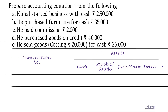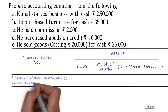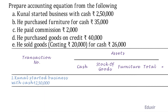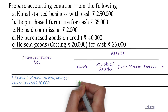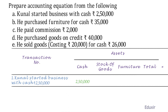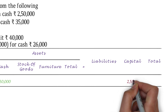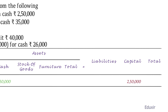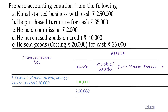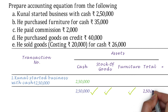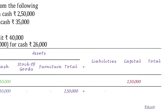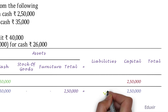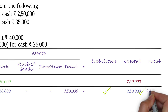The first transaction is: Kunal started business with cash ₹2,50,000. This transaction increases the cash as asset by ₹2,50,000 and also increases the capital by ₹2,50,000. After this transaction, the business will have ₹2,50,000 worth of cash, no stock of goods yet, no furniture yet. Total assets will be ₹2,50,000, no liabilities yet, total capital ₹2,50,000, and total of liabilities and capital would be ₹2,50,000.